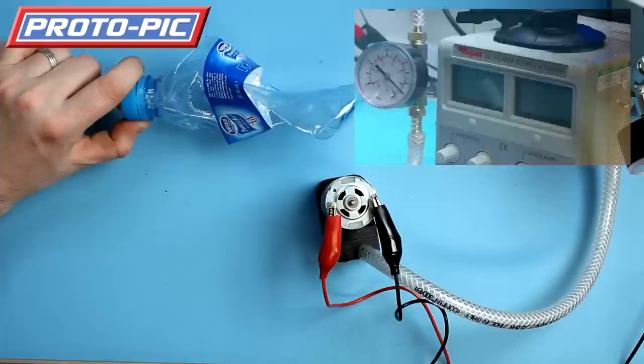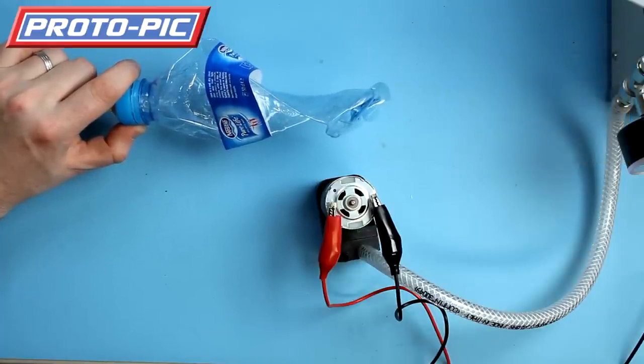That went from zero inches of mercury down to about 15 inches of mercury in about nine to ten seconds.